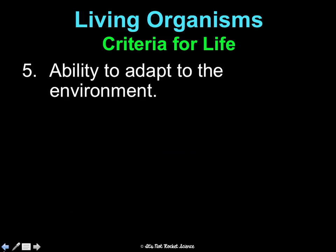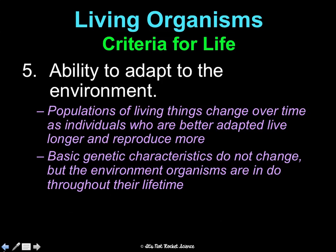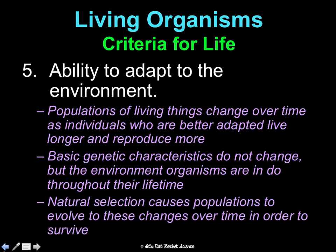Five: you have to have the ability to adapt to your environment. Remember from our evolution unit that populations of living things change over time, as individuals who are better adapted to their environment live longer and reproduce more, and thus their traits become more common over time. Basic genetic characteristics don't change, but the environments organisms are in do, and thus who survives is changing. Natural selection causes populations to evolve to these changes over time.